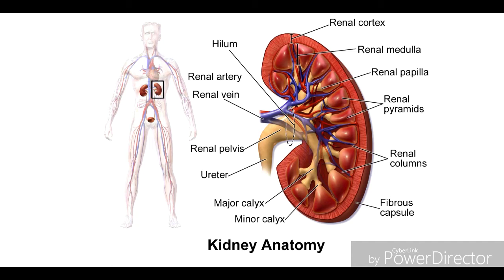Next is the ureter. The ureter is 20 to 25 cm long and is a long muscular tube. The kidney connects through a tube approximately 3 cm in diameter, which helps transport urine to the urinary bladder.